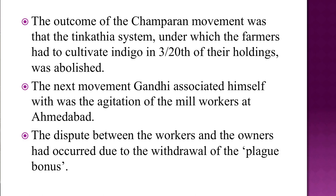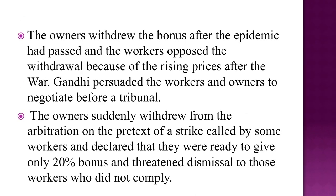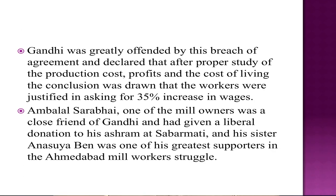The next movement Gandhi associated himself with was the agitation of the mill workers at Ahmedabad. The dispute between the workers and owners had occurred due to the withdrawal of the plague bonus — the owners withdrew the bonus after the epidemic had passed, and the workers opposed the withdrawal because of the rising prices after the war. Gandhi persuaded the workers and owners to negotiate before a tribunal. After studying production cost, profits, and cost of living, Gandhi concluded that the workers were justified in asking for a 35 percent increase in wages.